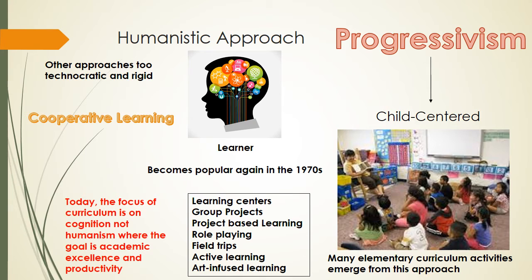The humanistic approach became popular again in the 1970s as relevancy, radical school reform, open education, and alternative education became part of the education reform movement. Today, demands for educational excellence and academic productivity have resulted in an emphasis on cognition, not humanism, and on subjects such as science and math rather than art and music. Nonetheless, the humanistic approach may gain adherence as people come to realize the interdependence of cognition and affect, and that students' self-concept, self-esteem, and personal identity are essential factors in learning.